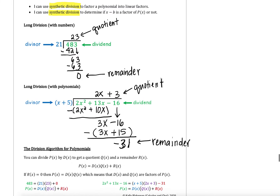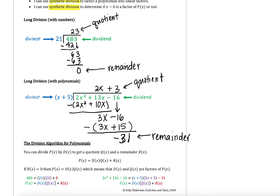That leads us to our division algorithm. The division algorithm for polynomials says that if we divide p of x by d of x — both polynomials — we get a quotient q of x and a remainder r of x. Our original polynomial p of x would be equal to the divisor times our quotient plus our remainder. So in this example, 2x squared plus 13x minus 16 equals x plus 5 times 2x plus 3, minus 31. That represents our original polynomial equals our divisor times our quotient plus our remainder. The same concept worked up above with numbers: 483 equals 21 times 23 plus a remainder of 0.